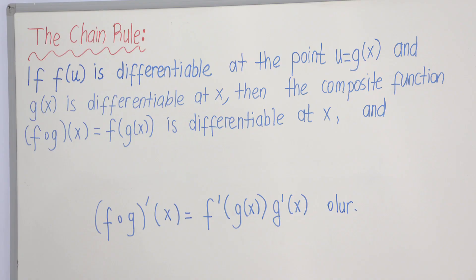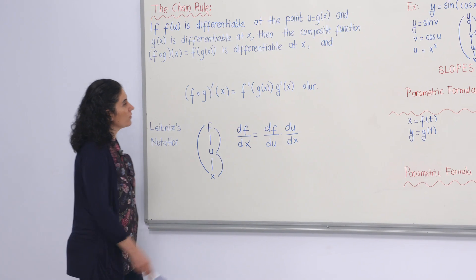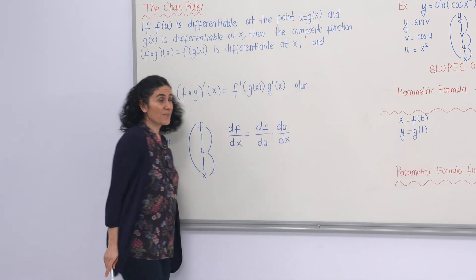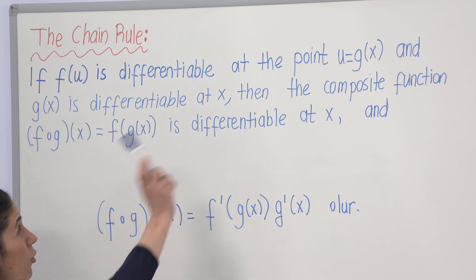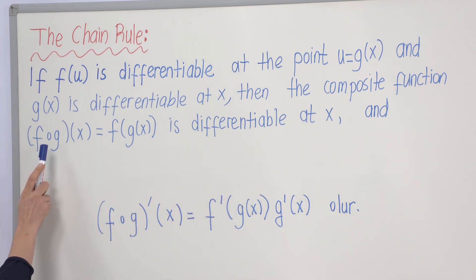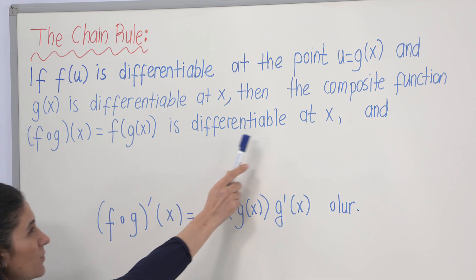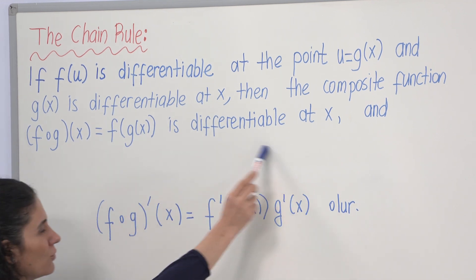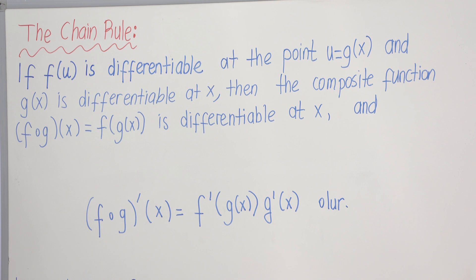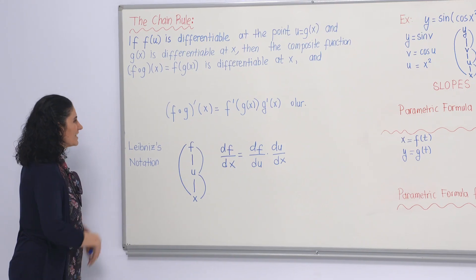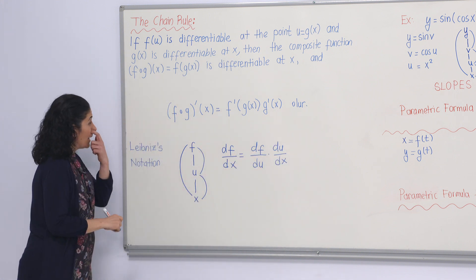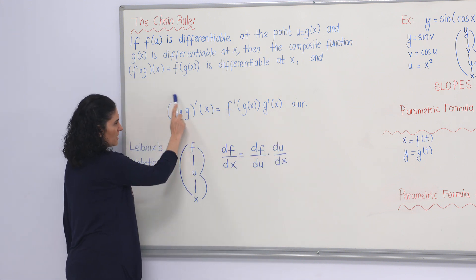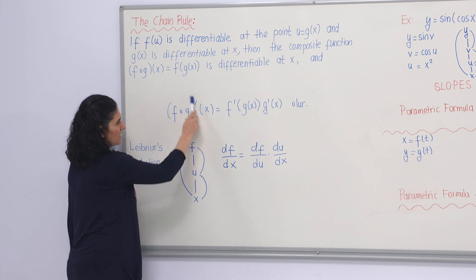Let me recall the rule shortly. If f is differentiable at the point u, where u is a function of x, and g is differentiable at x, then the composite function f composed with g is differentiable at x. The chain rule is explained using Leibniz notation, where f is the outside function and g is the inside function.